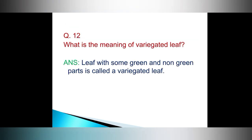Question number 12. What is the meaning of variegated leaf? Answer. A leaf with some green and non-green parts is called a variegated leaf.